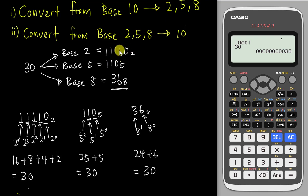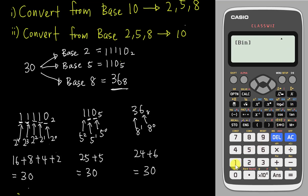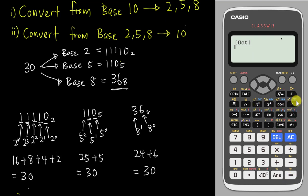Using the calculator to convert base 2 to base 10: go to BIN, type 11110, press Enter, then go to DEC — it changes to 30. Same for base 8: go to OCT, type 36, press Enter, then go to DEC — you get 30. This is very useful when your number is very big. Base number questions in SPM only come out in Paper 1, so I highly recommend using the calculator whenever you can. If you have base 5 then you have no choice but to do it manually.